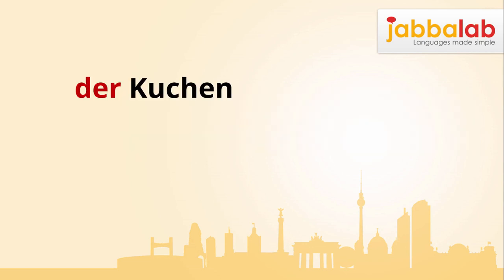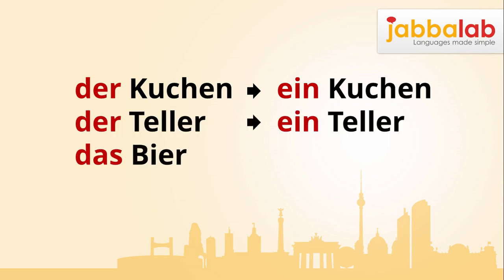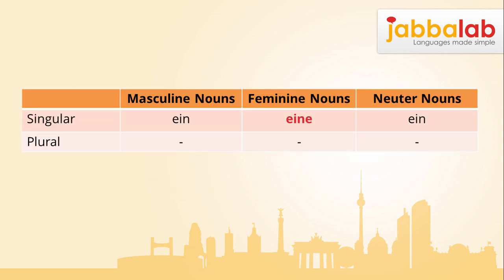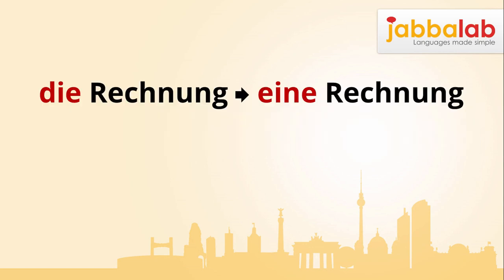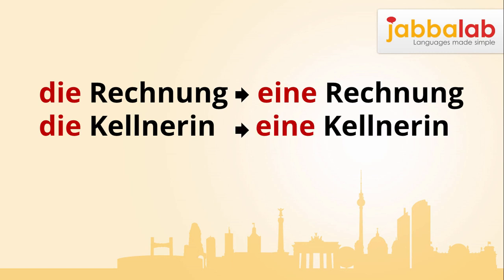For example: der Kuchen – ein Kuchen, der Teller – ein Teller, das Bier – ein Bier, das Messer – ein Messer. And feminine words use 'eine', for example: die Rechnung – eine Rechnung, die Kellnerin – eine Kellnerin.